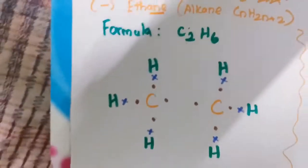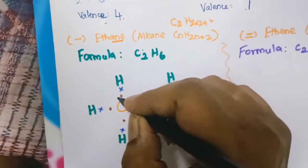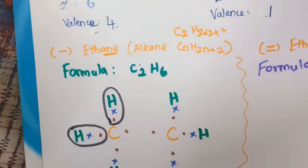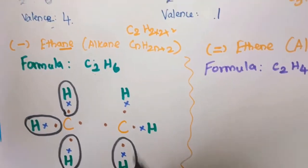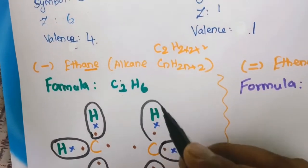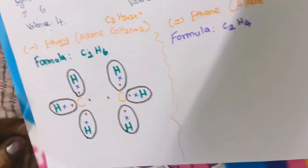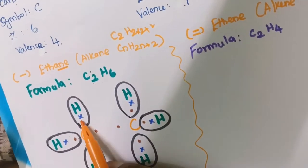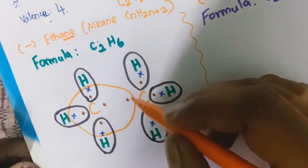The hydrogen will be fulfilled when there are 2 electrons in the outermost shell. So each hydrogen will get 1 electron from the carbon. We know that carbon will be satisfied only if it gets 8 electrons. Counting the shared electrons: 1, 2, 3, 4, 5, 6, 7, 8 — that is 8 electrons. Likewise, the second carbon also gets 8 electrons and is satisfied.